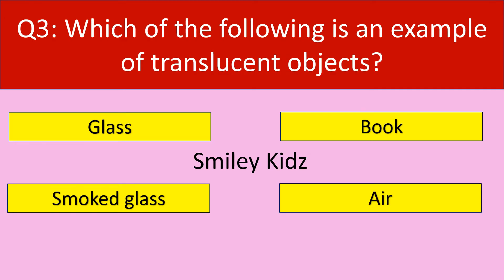Question number 3. Which of the following is an example of Translucent objects? Your options are: Glass, Book, Smoked glass, Air.